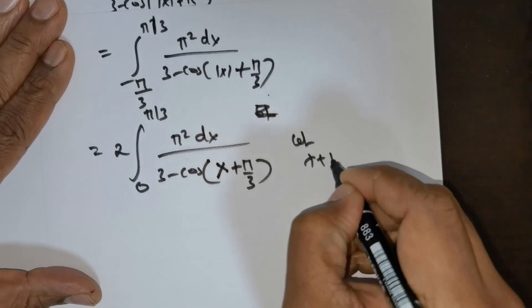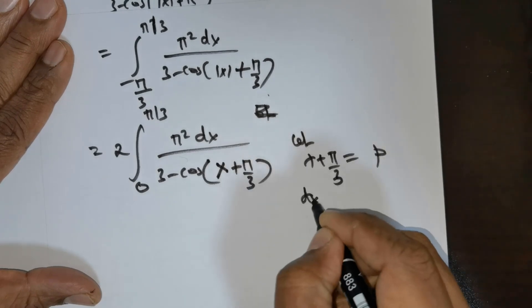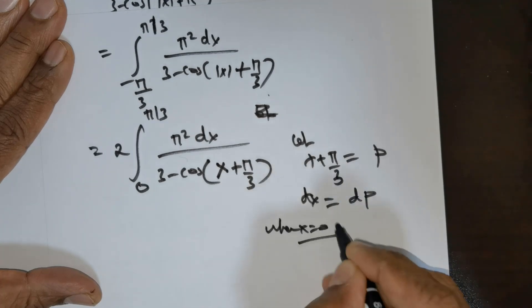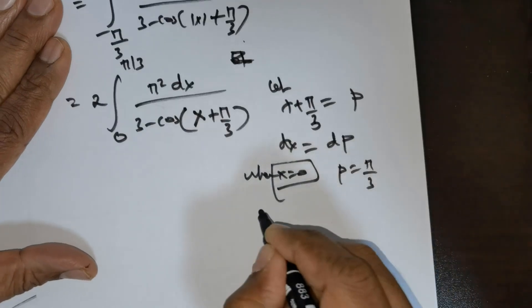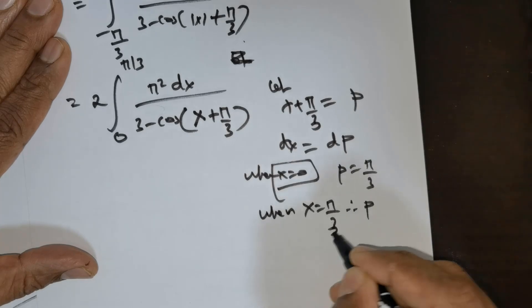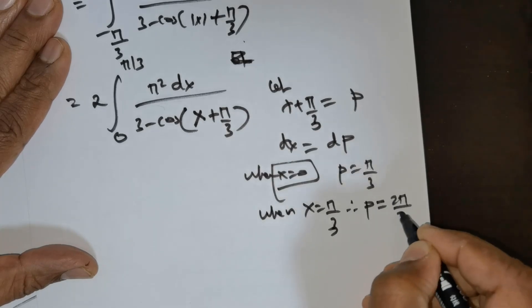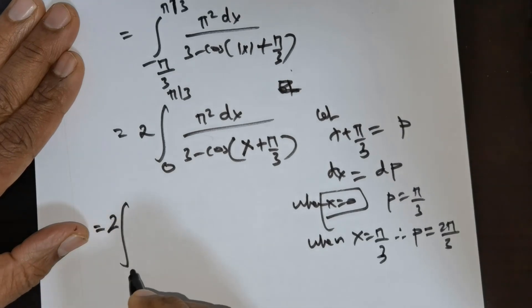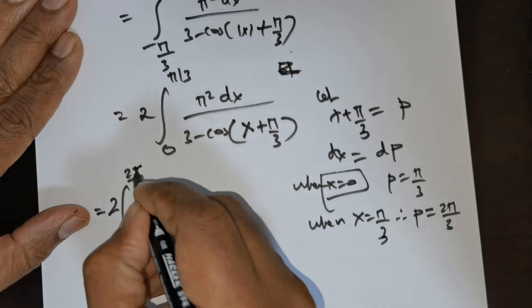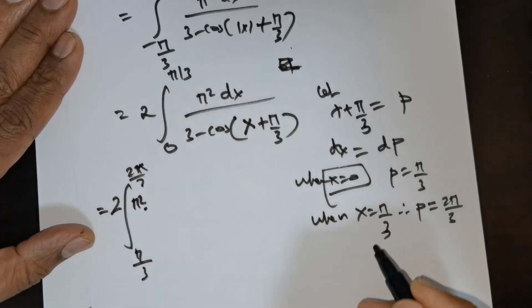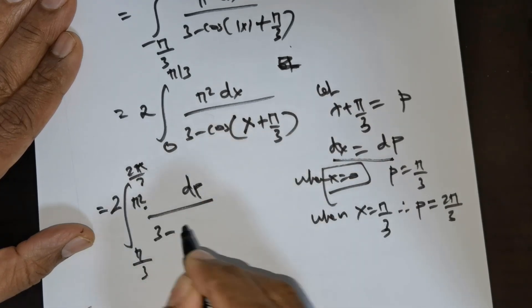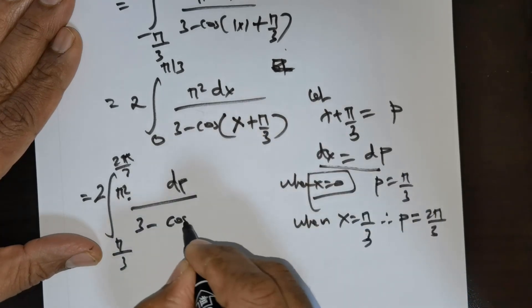Now let me take x + π/3 = p. Differentiating gives dx = dp. When x = 0, p = π/3; when x = π/3, substituting gives p = 2π/3. So the limits become 2 times the integral from π/3 to 2π/3 of π² dp divided by 3 - cos p.